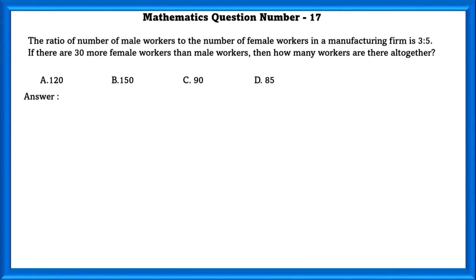Mathematics question number 17. The ratio of number of male workers to the number of female workers in a manufacturing firm is 3 to 5. If there are 30 more female workers than male workers, then how many workers are there altogether?